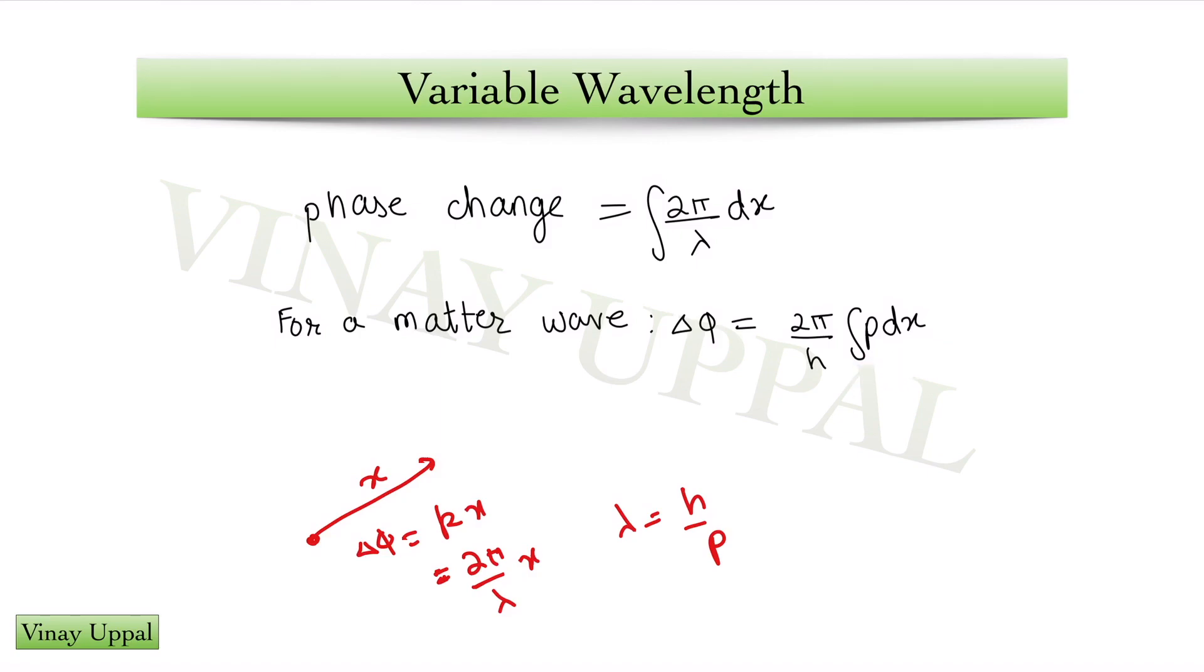Here, dx is the path length. It is not the x coordinate, it is the path length. One can very well imagine a scenario in which the momentum is changing because of gravity and therefore, that will represent the case of variable wavelength. That is exactly what the question is based on. Let us have a look.